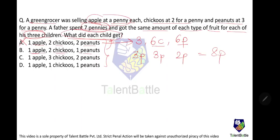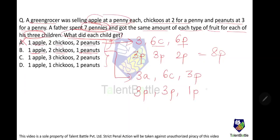Now, one apple, two chikus, one peanut per child means all three children together get three apples, six chikus, and three peanuts. Cost: three apples = three pennies, six chikus = three pennies, three peanuts = one penny. That comes out to seven pennies. So the answer is Option B.